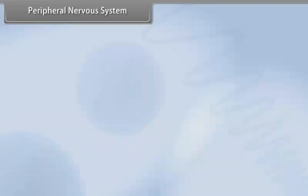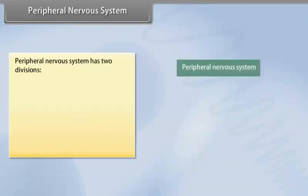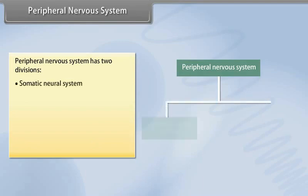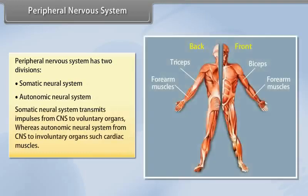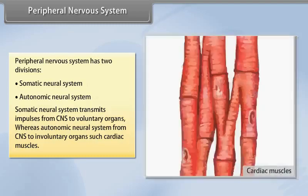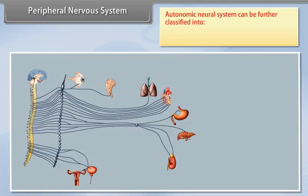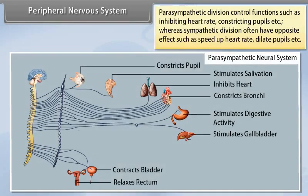Peripheral nervous system has two divisions: somatic neural system and autonomic neural system. Somatic neural system transmits impulses from CNS to voluntary organs, whereas autonomic neural system from CNS to involuntary organs such as cardiac muscles.